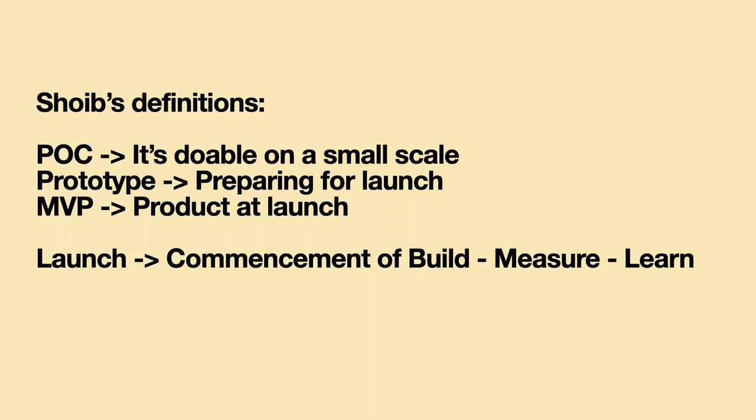A proof of concept is trying to do something at a very small scale. You don't need to worry about anything — you just need to prove that if you have a solution that can help the entire world, can you help 10 people? Doesn't matter how you do it. Doesn't matter if you don't even write a single line of code.